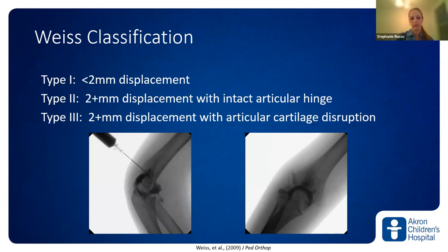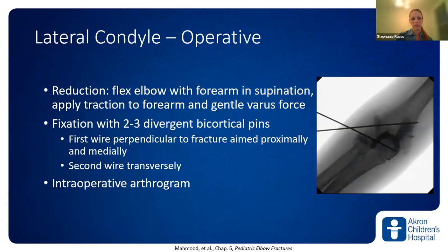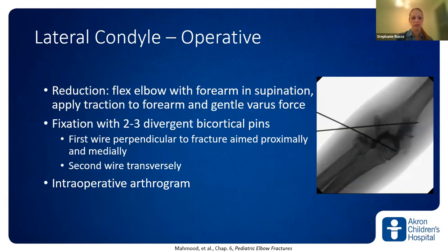Type 2s and 3s have more than two millimeters of displacement, and unless the fragment is rotated way out, it usually requires an arthrogram to distinguish between these. I like to perform the arthrogram going straight into the posterior aspect of the olecranon fossa. Assess the articular cartilage to decide for closed or open reduction. If the cartilage is intact, a closed reduction is typically adequate, using two to three divergent bicortical pins. I place the first pin perpendicular to the fracture line and the second nearly parallel to the articular surface.